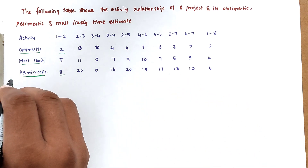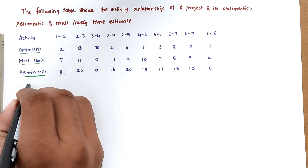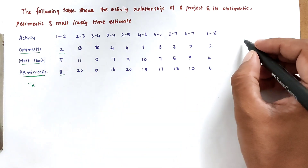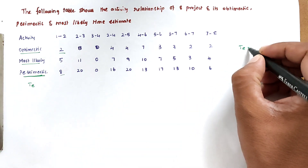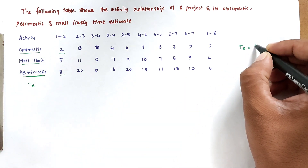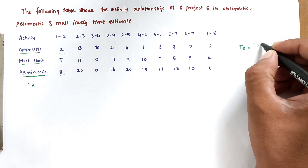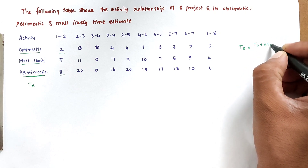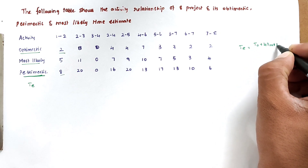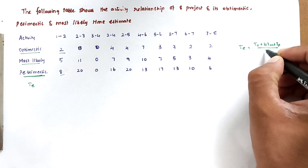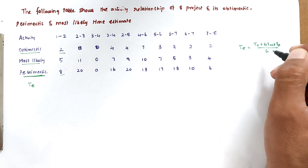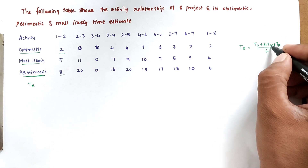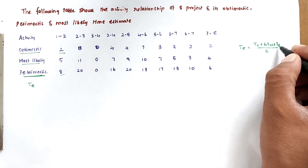Now we have to find the estimated time, TE. The formula for TE is: TE = (TO + 4·TM + TP) / 6, where TO is the optimistic time, TM is the most likely time, and TP is the pessimistic time.